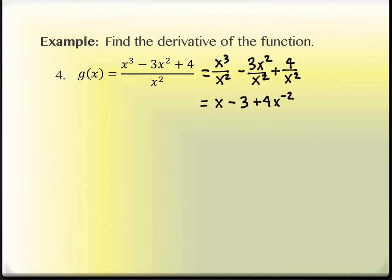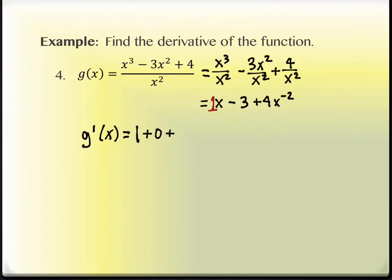Now we're ready to find g prime of x. The derivative of x is 1 — the coefficient is understood to be there even though we don't see it written. The derivative of the negative 3 in the middle is 0. And for the derivative of 4x to the negative 2: the negative 2 comes down and multiplies by 4, giving negative 8x, and the new exponent is negative 3.